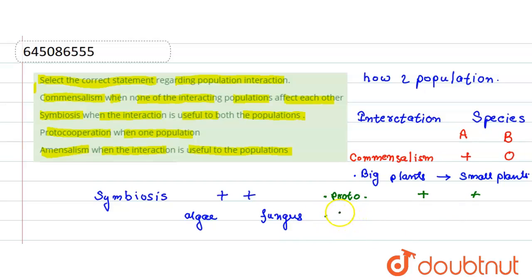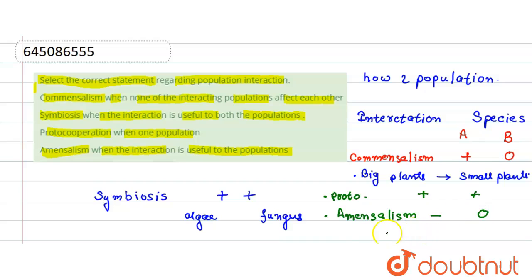Our last case is amensalism. Amensalism means one species is getting a loss and the other has no benefit and no loss - denoted as minus and zero. An example is Penicillium fungus: Penicillium kills bacteria, so the bacteria is getting a loss.